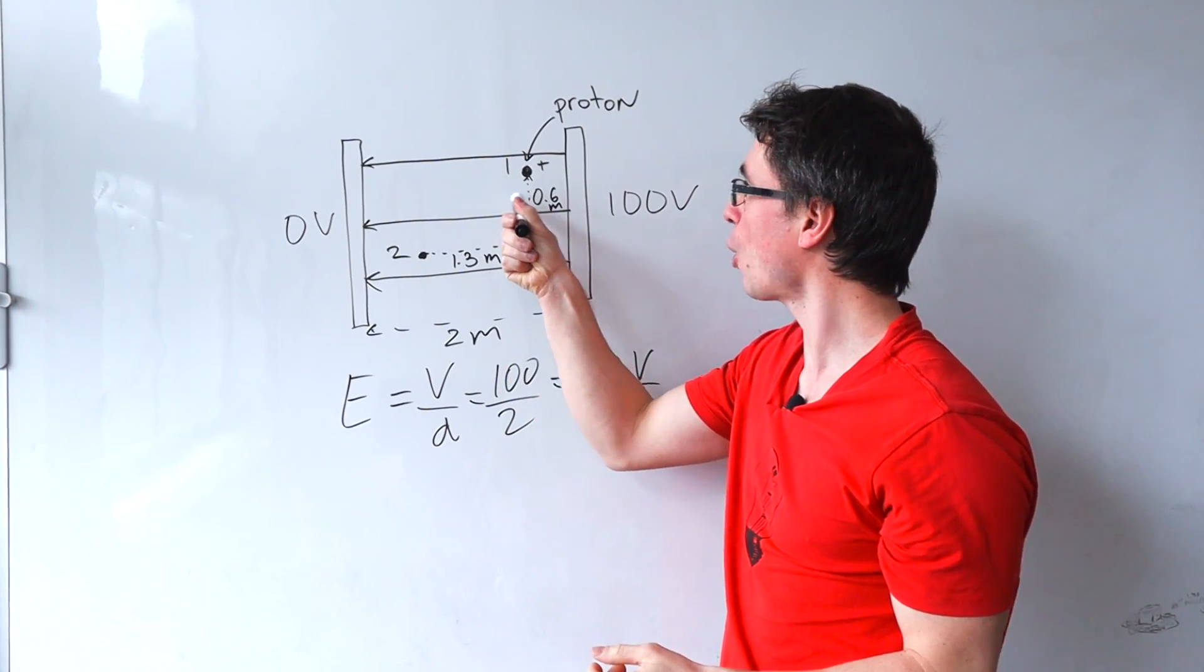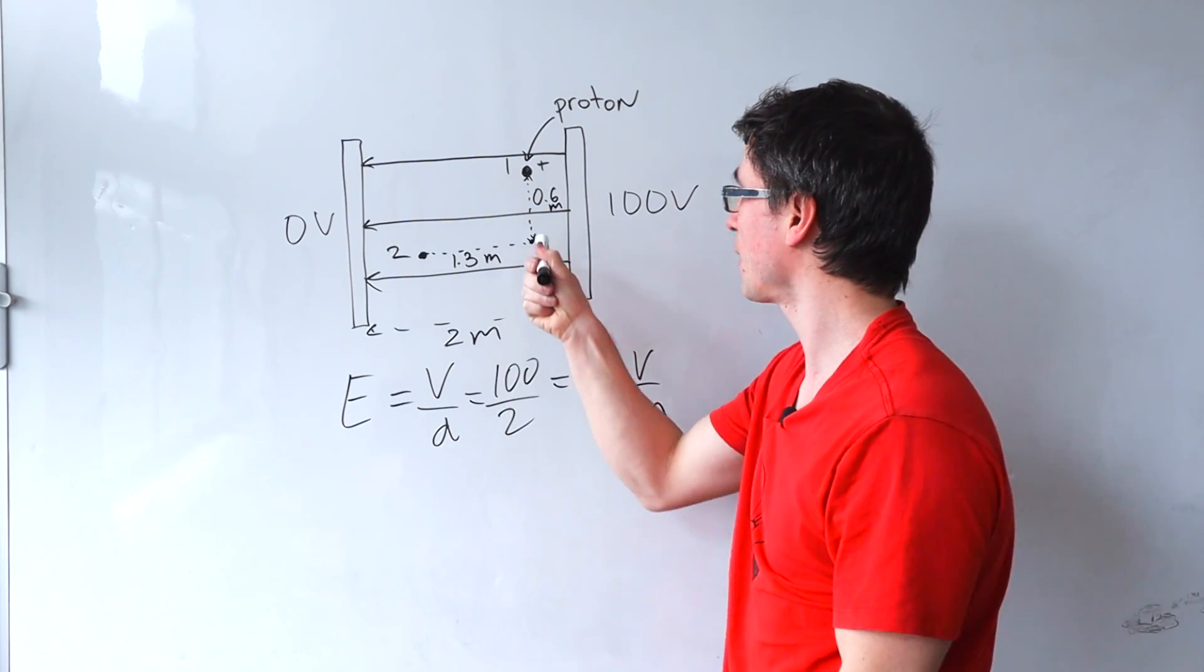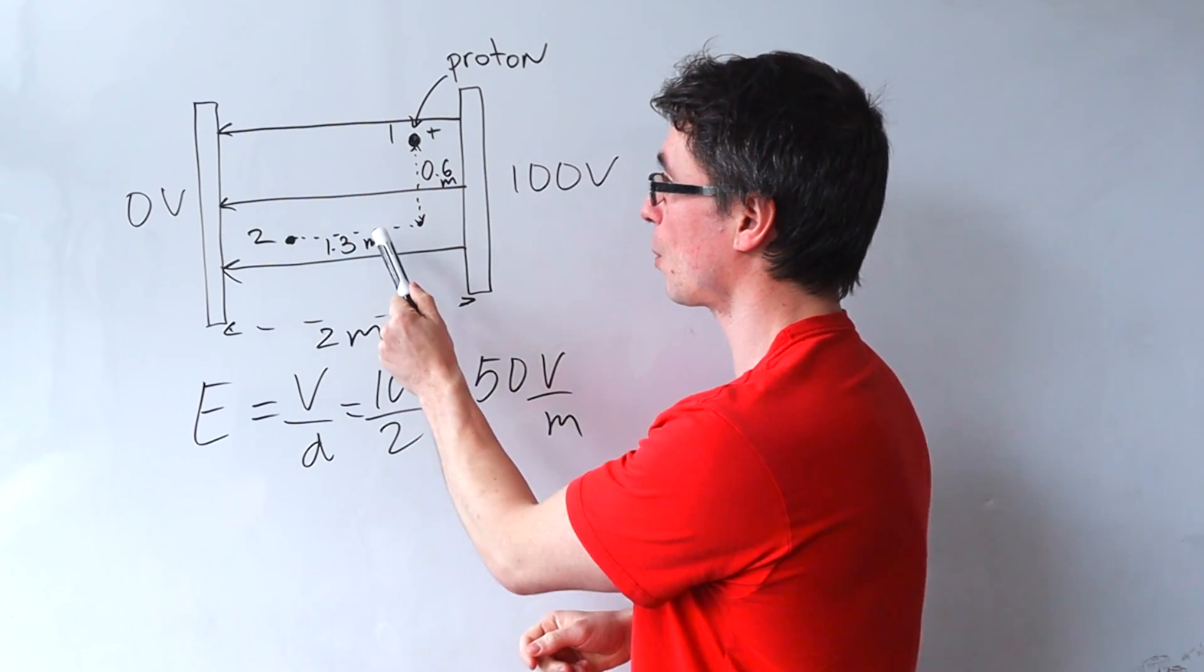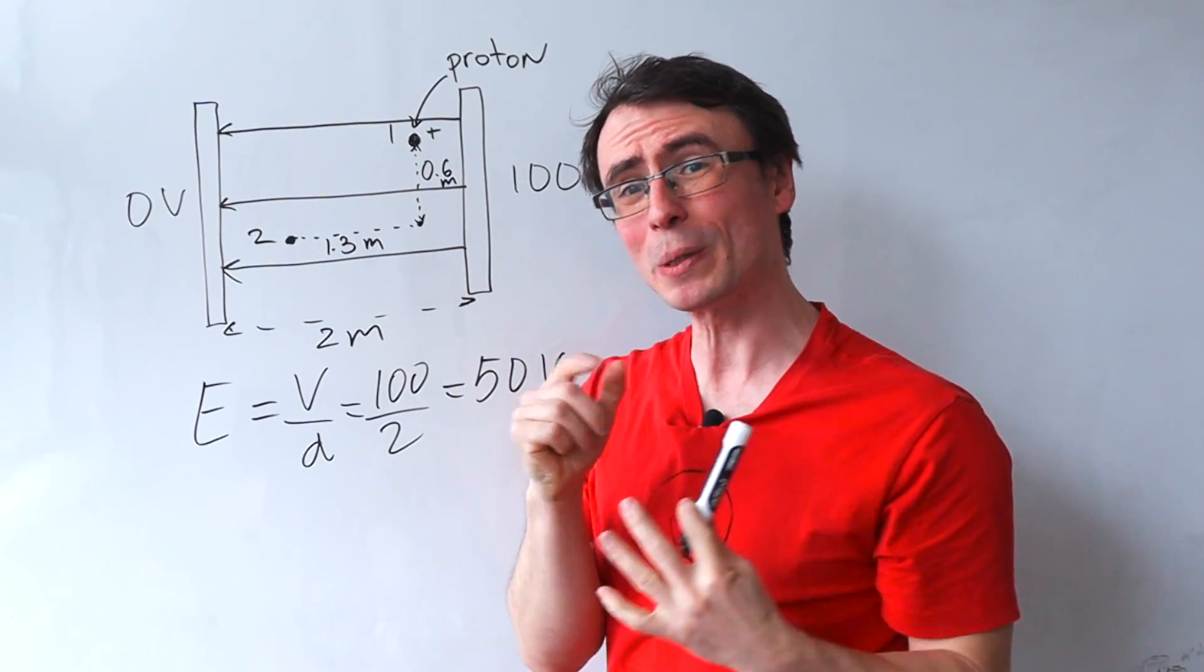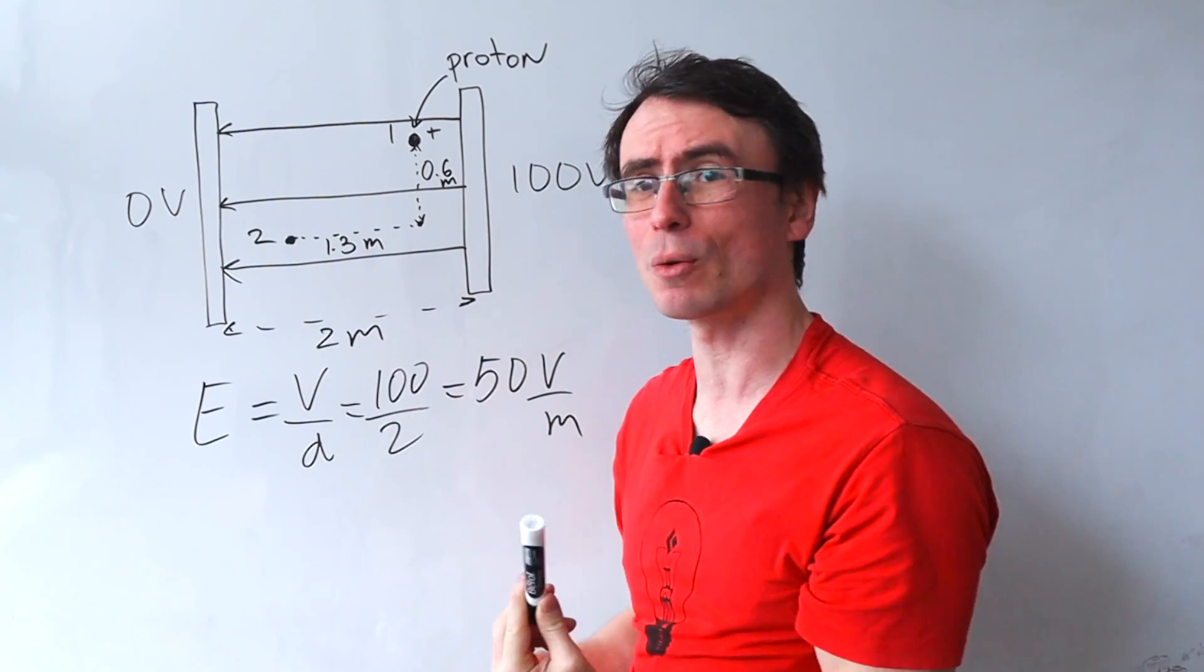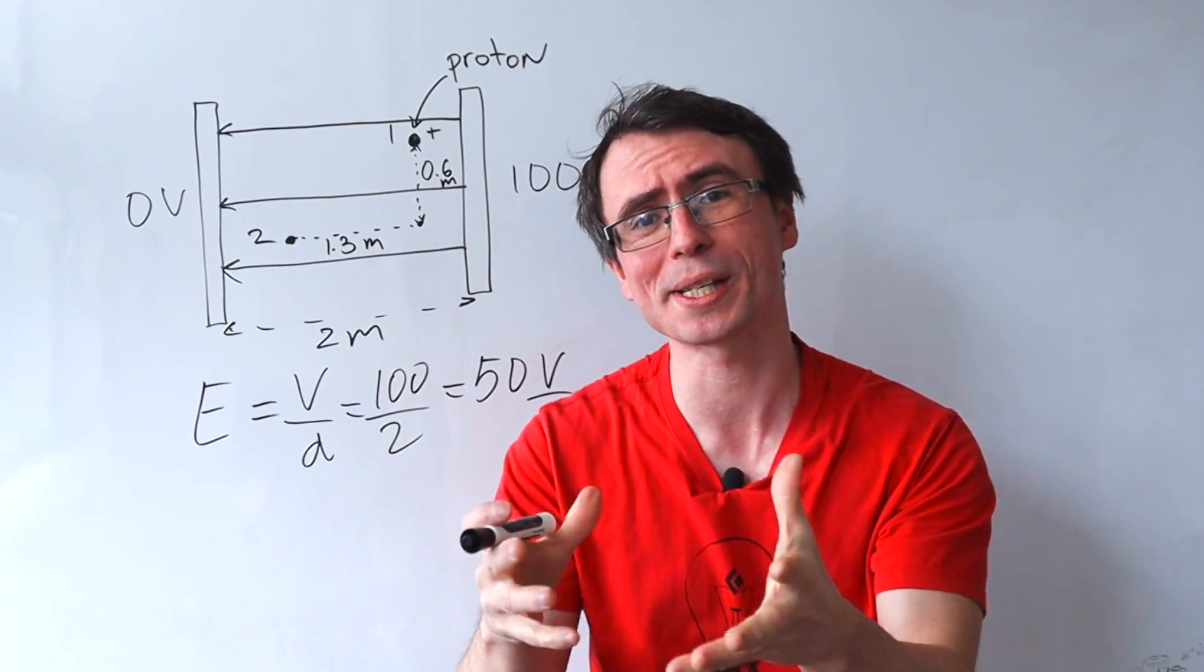If I was to release it a little bit lower it will also reach the negative plate with the same speed. If I was to release it here same again. However if I was to release the proton from here it will accelerate for a little bit less and reach this at a lower speed and if I was to release it from here at lower speed still.